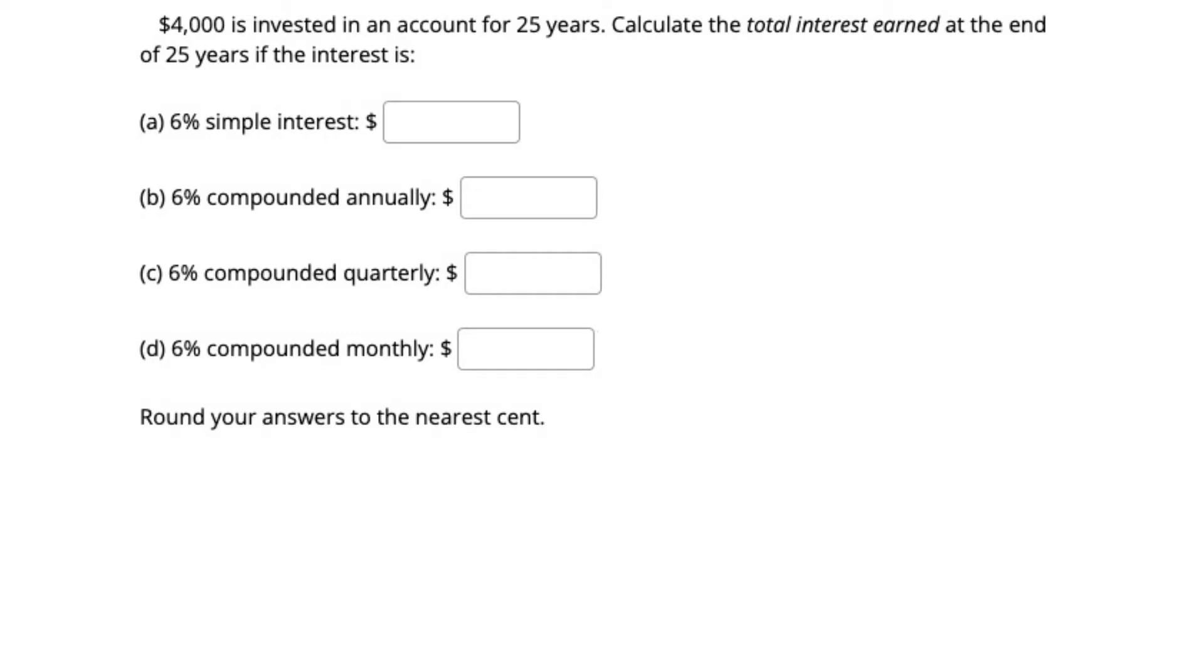For this problem, we're going to look at both simple interest and compound interest. Let's begin by identifying some key pieces of information. It says $4,000 is invested. Right away, I know that $4,000 is my principal. So I'm going to write down what I know, which is my principal, or my P-value is $4,000. The second thing I know is that it's invested in an account for 25 years. That tells me that my time, or my T-value, is 25.